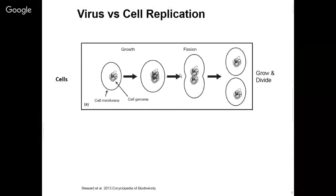Viruses are fundamentally different from things we consider living. All living things are based on cells. How do cells grow and divide and replicate? A cell is a living thing — it has metabolism. It acquires material and energy from the environment that allows it to get bigger and then split into two daughter cells. That's how all living things grow and how populations grow — it's cell division.